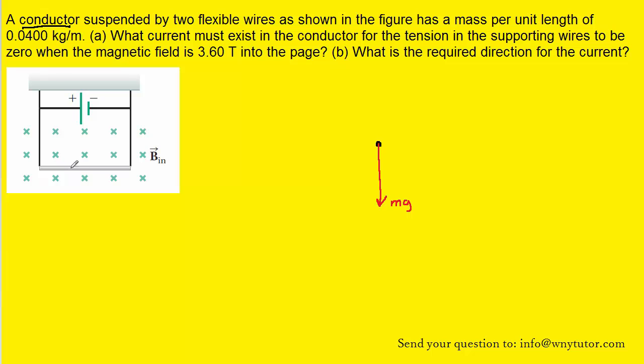Now because this conductor is carrying current and is also placed in a magnetic field, it's going to be experiencing a magnetic force. And in order to be suspended in air, that magnetic force would have to be pointing upward to counter the downward gravitational force. So we can label the magnetic force Fb and show it directed upward.